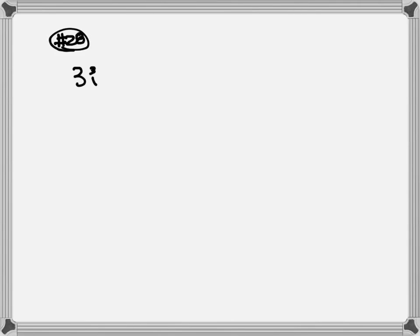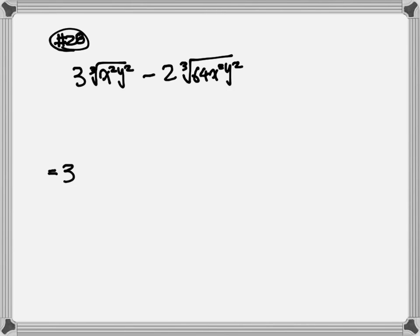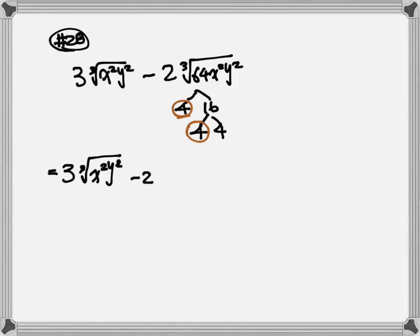Next let's look at number 28. We have 3 times the cube root of 3x²y² minus 2 times the cube root of 64x²y². The little 3 index on the first term tells us we're looking for three numbers the same, but inside the root we have x²y² — that's only two, not enough — so we're not going to take out anything, leave everything inside. For the second term, bring down the minus 2. Break down 64: 4, 16; 4 and 4. Here are my three 4s because the little 3 tells us we're looking for three numbers the same, so 4 goes out.